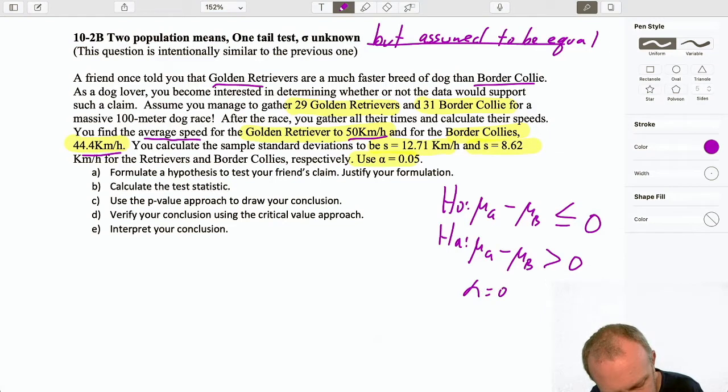The rest of this, extremely similar. We're doing a t-test. I should justify my formulation. First, if the evidence supports the null hypothesis, well, now we're saying that the Golden Retriever goes no faster than the Border Collie. At most, they go as quickly, as fast as the Border Collie.